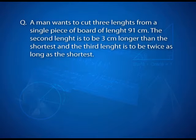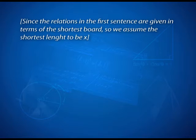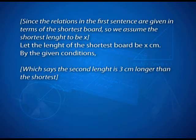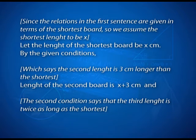One more example: a man wants to cut 3 lengths from a single piece of board of length 91 cm. The 2nd length is to be 3 cm longer than the shortest, and the 3rd length is to be twice as long as the shortest. Let the shortest length be x cm. Therefore, the 2nd board is x + 3 cm and the 3rd piece is 2x cm.